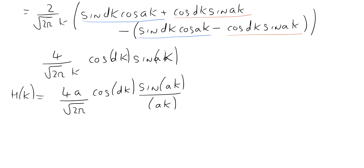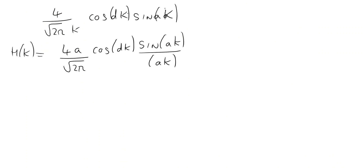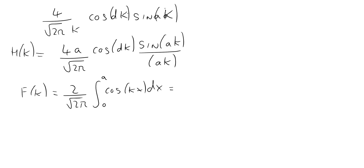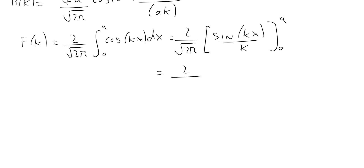We start by finding f(k), the Fourier transform of the top hat function. Again this is an even function, so we write it as 2 over the square root of 2π, times the integral from 0 to a of cos(kx) dx. This integrates to give 2 over the square root of 2π times sine(ka) over k, or equivalently, 2a over the square root of 2π times sine(ka) over ka — a nice sinc function.